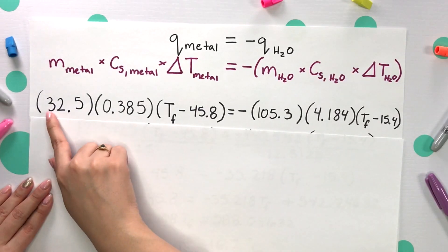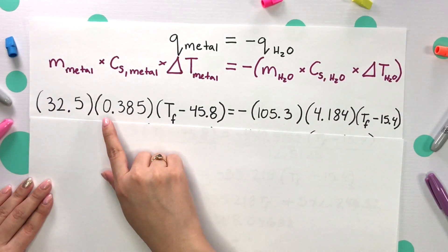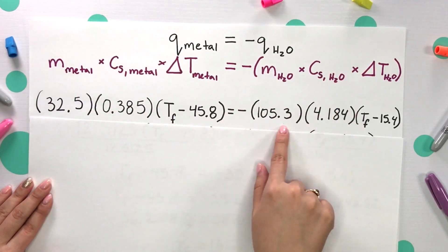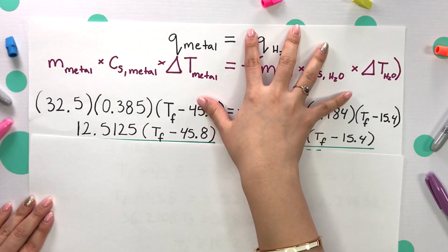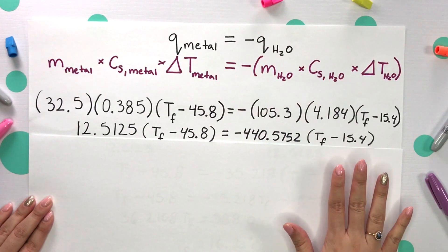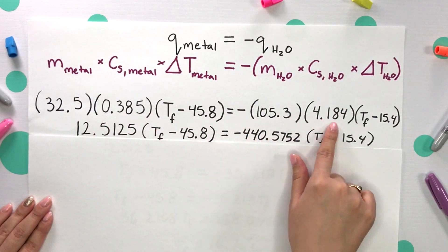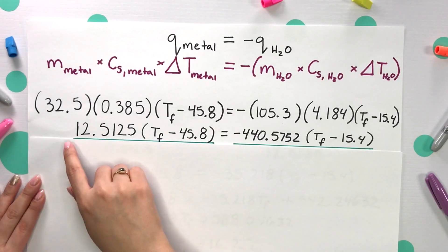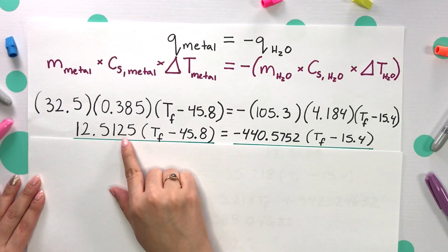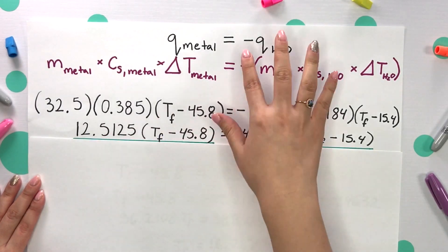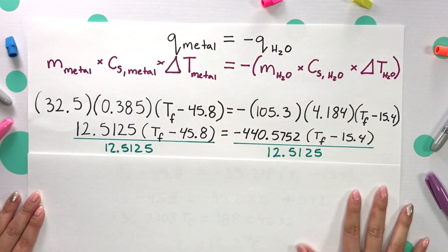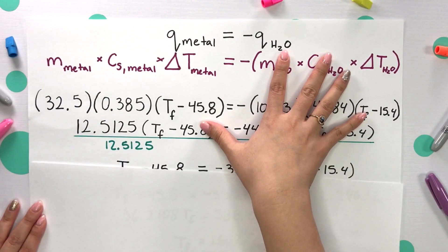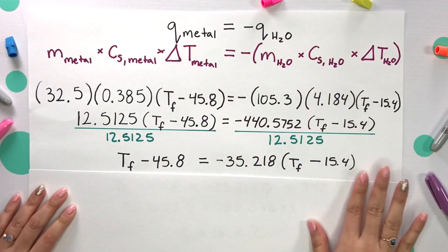Next, we multiply 32.5 and 0.385 together, as well as the water-side values with the negative. Instead of distributing and having a long problem, we'll divide both sides by 12.5125 to simplify. We cancel those terms and divide the remaining values, giving us a simpler expression.